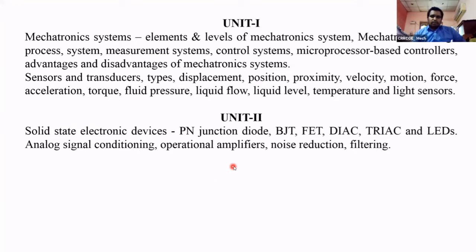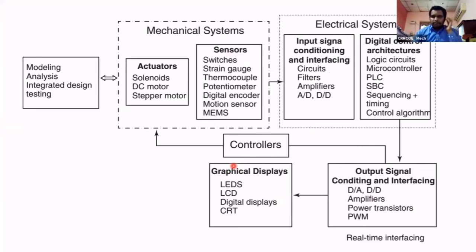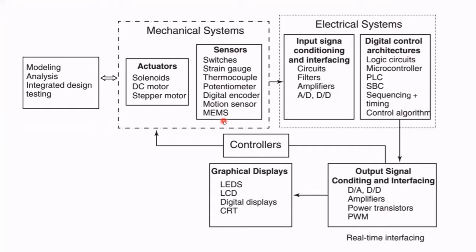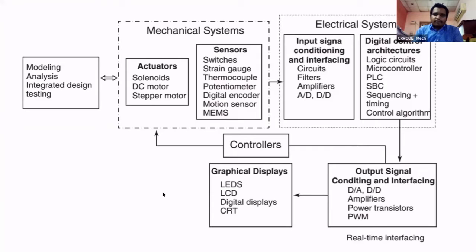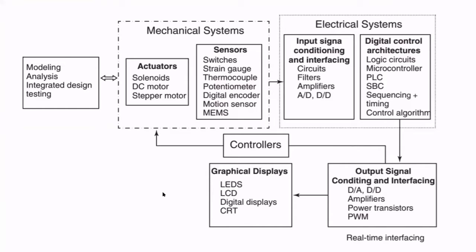From today onwards, we will start a new unit - that is the third unit. This flowchart represents the elements of the mechatronics system. In this mechatronics system, the elements are: sensors, actuators, signal conditioning, and controller - and displays, graphical displays. Our total syllabus is about learning different elements of the mechatronics system.